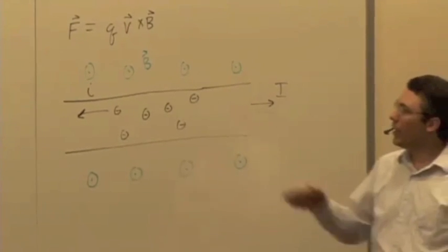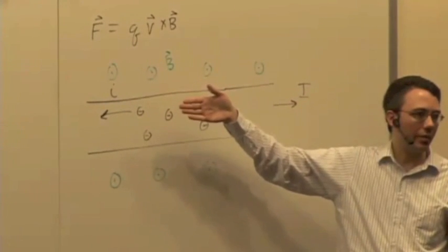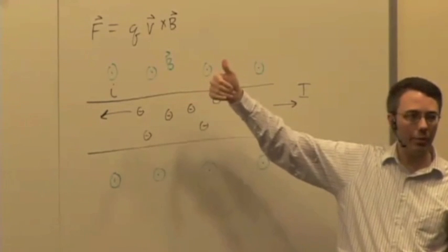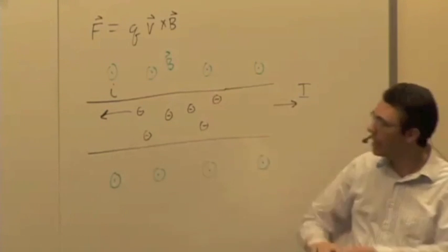So an individual electron moving in this direction would experience a force in what direction? Let's see, QV, or V cross B is up, but we have to multiply it by the charge, right? So we're going to get a force pointing downward.